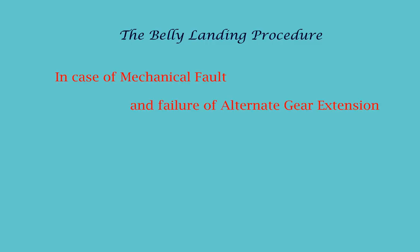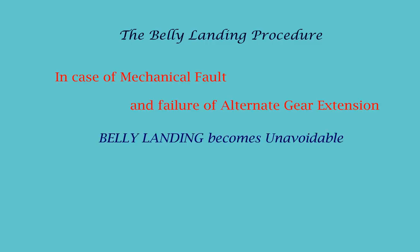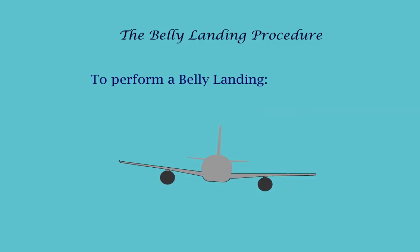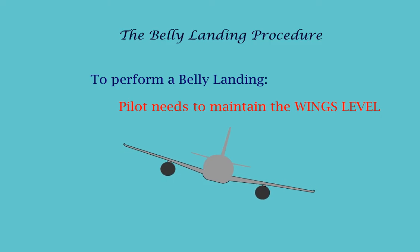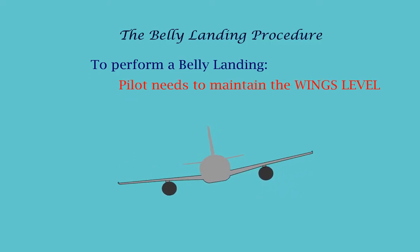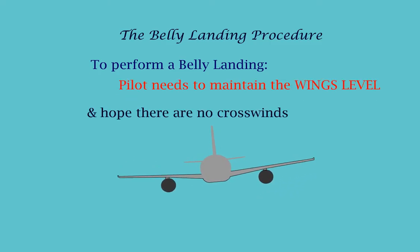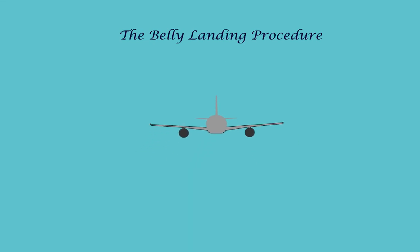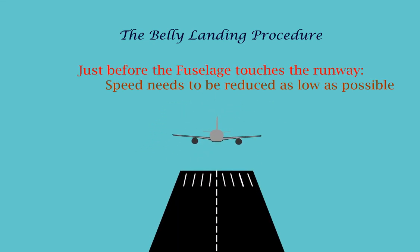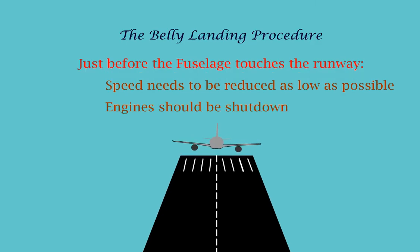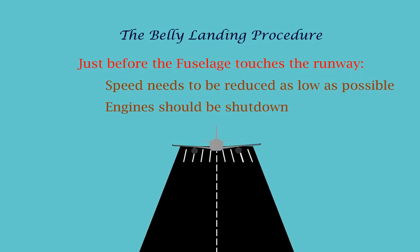In case of a mechanical fault and the failure of the alternate gear extension, a belly landing becomes unavoidable. To do a belly landing, the pilot needs to maintain wings level and hope there are no crosswinds. Just before the fuselage touches the runway, the speed should be reduced as low as possible and the engines should be shut down.